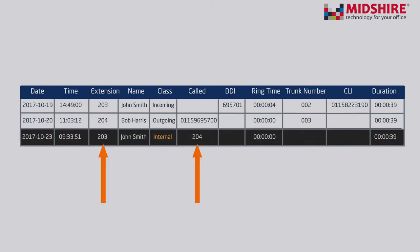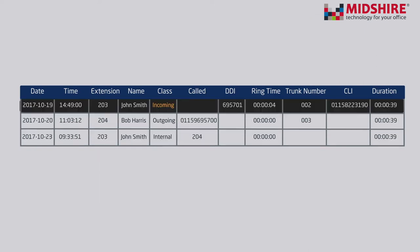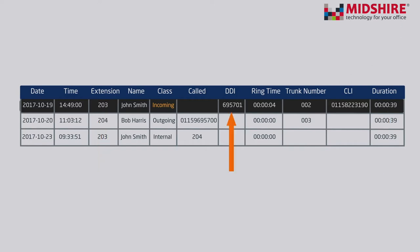Internal calls show the extension numbers and the duration of the call. Incoming calls show how long the call rang before it was answered and the extension that answered the call. It also includes the call duration, DDI, and trunk number.